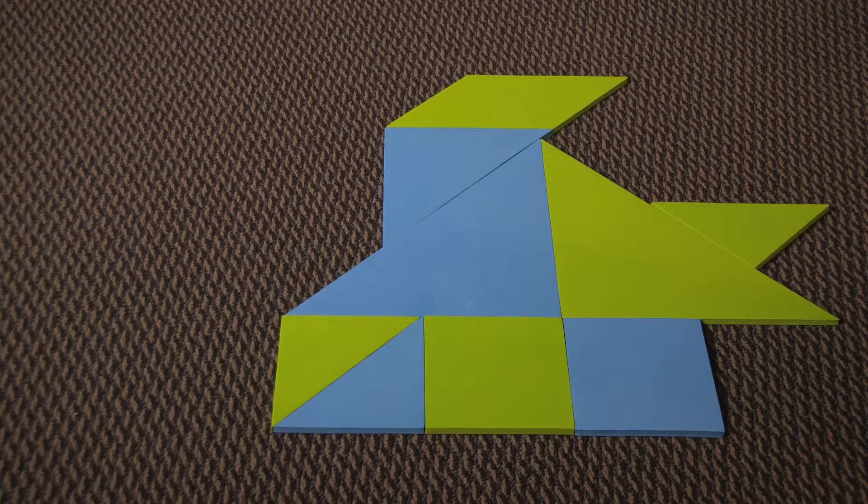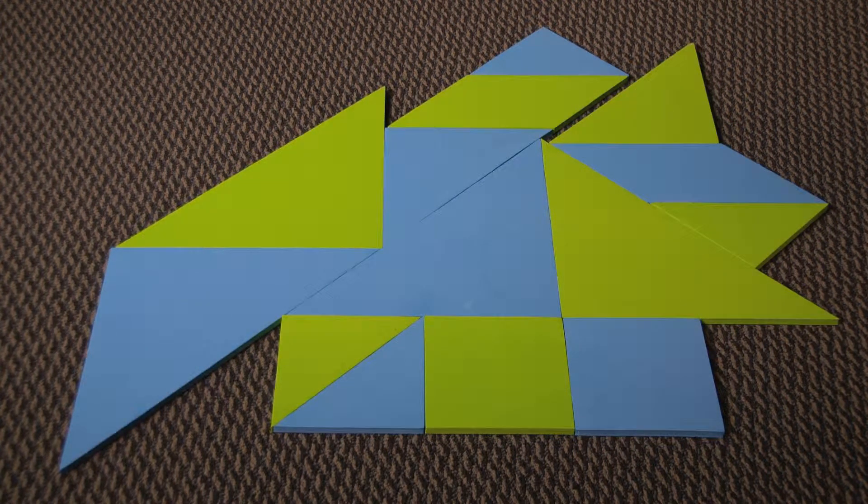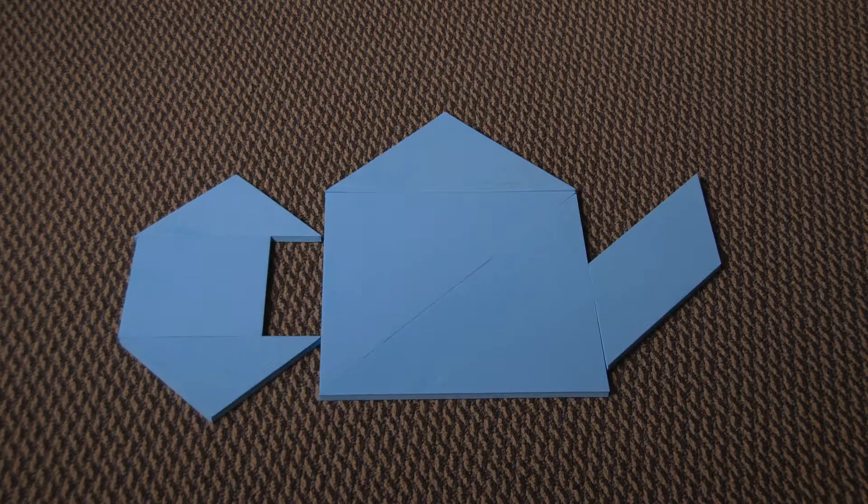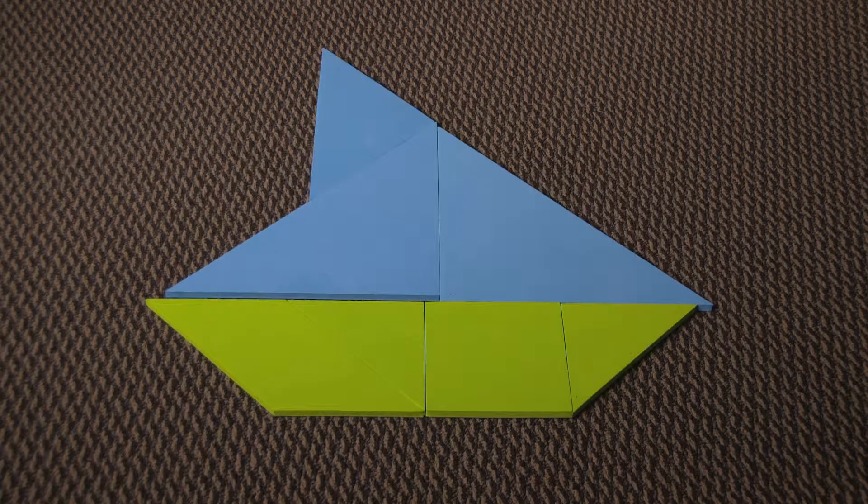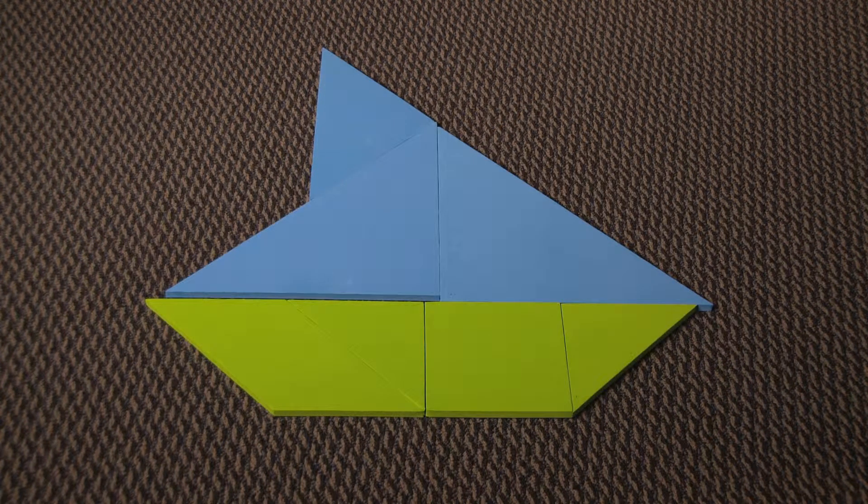Having two sets of tangram shapes offers exponentially more combinations. Try creating shapes of your own or use the complementary colors to highlight features in your design, like a green boat with a blue sail.